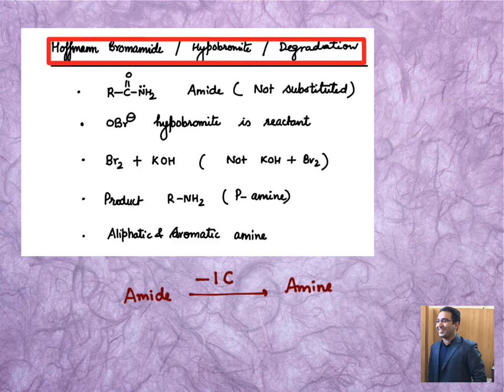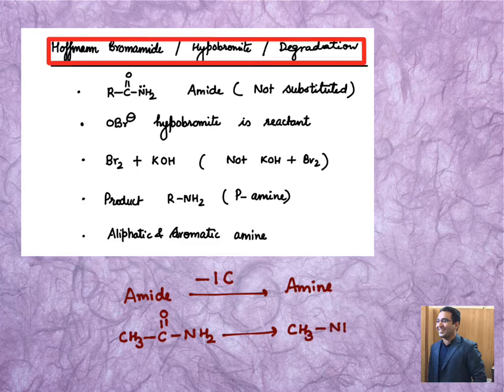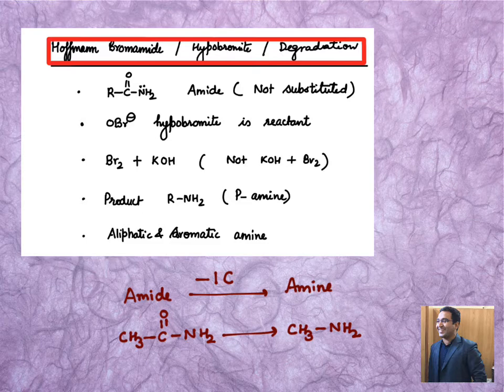Let's say we are starting with something like CH3-C double bond O-NH2. What is the final product that we should get? We should get CH3-NH2, that is an amine. So this is the process through which it converts. CH3-C double bond O-NH2 becomes CH3-NH2.